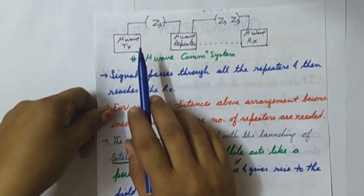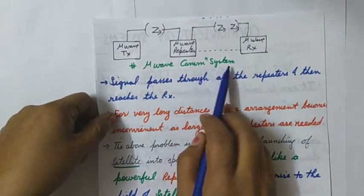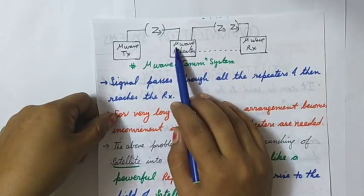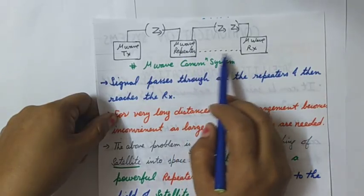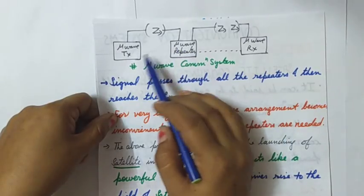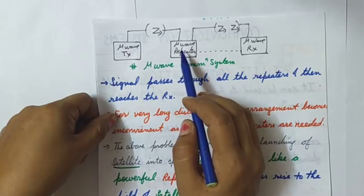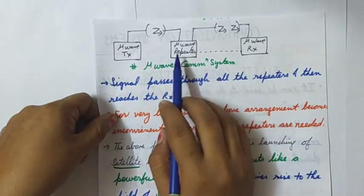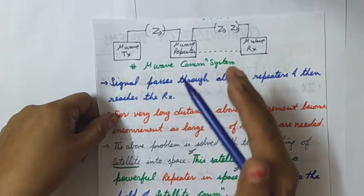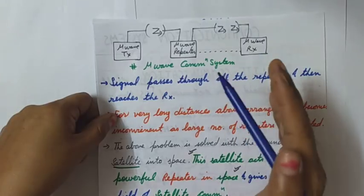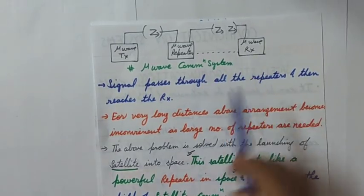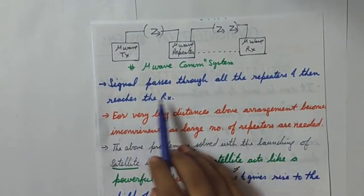This diagram shows the microwave communication system — microwave transmitter and microwave receiver. In between I have placed microwave repeaters; the dashes show there can be many repeaters. Each repeater receives the signal from the transmitter, amplifies, reshapes, and again transmits. All the repeaters keep boosting, reshaping, and reconstructing the signal until it is delivered to the receiver.